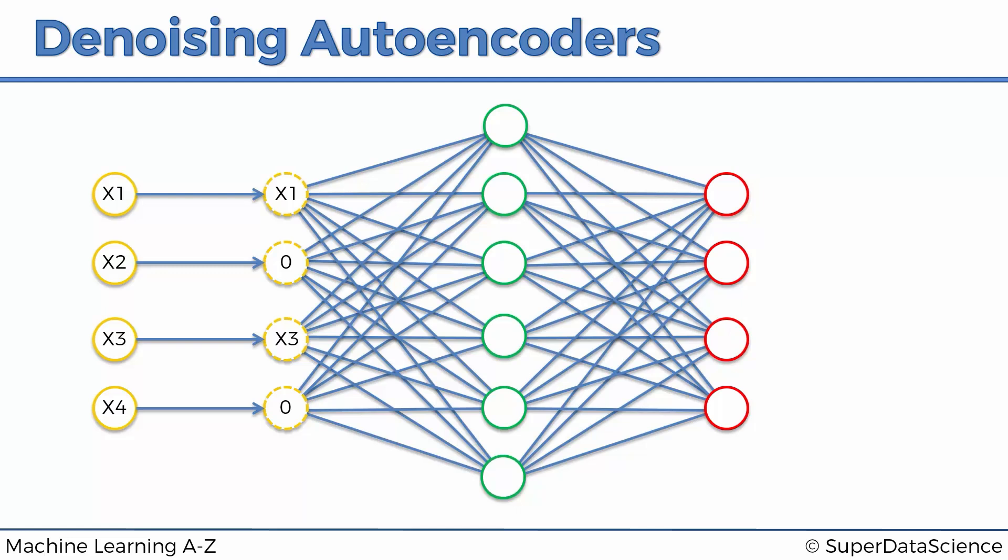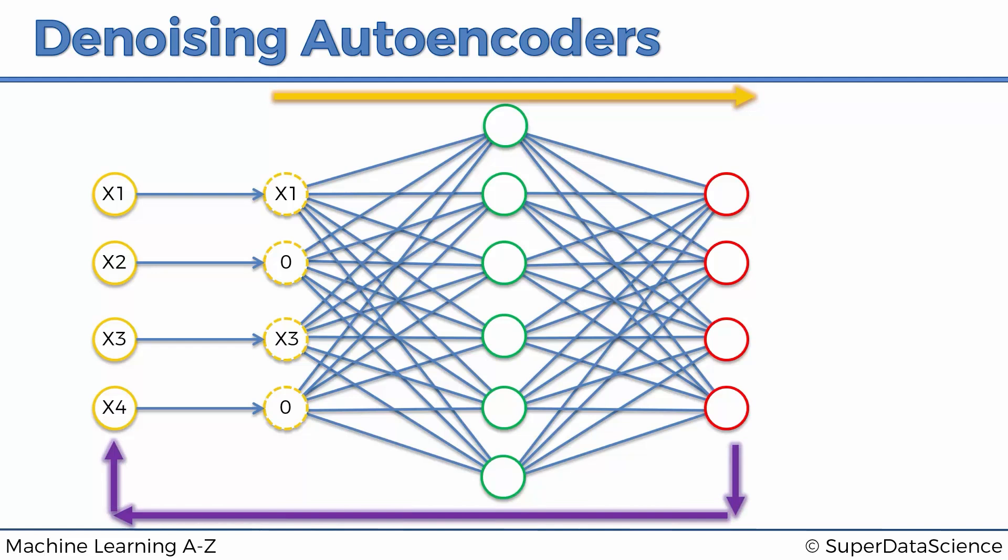And then once you put this data through your autoencoder, what you do in the end is you compare the output, not with the modified values, but with the original values.